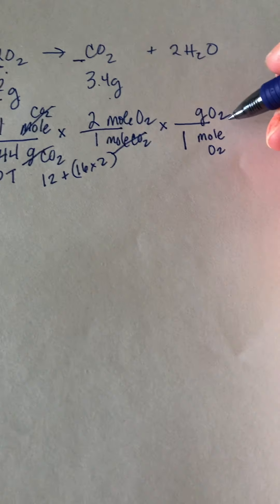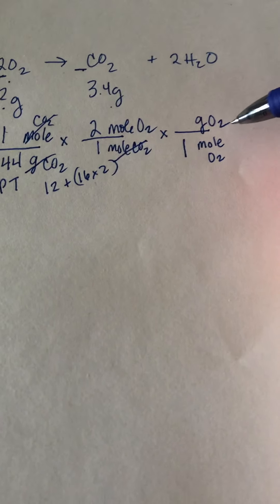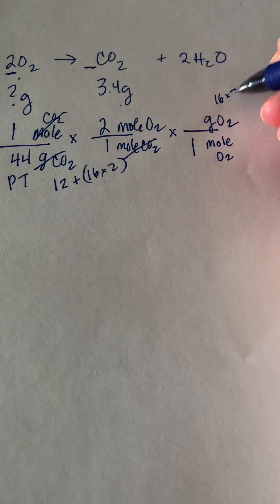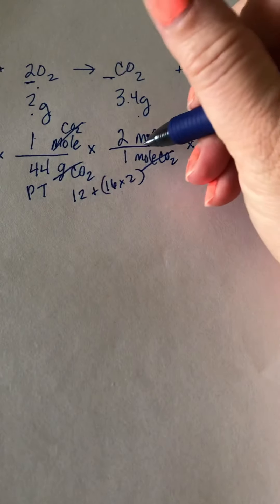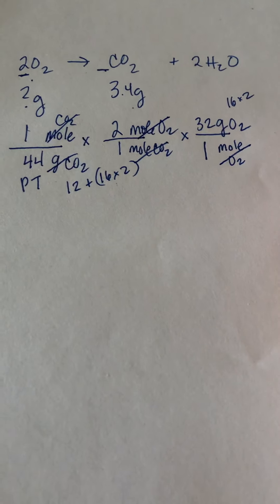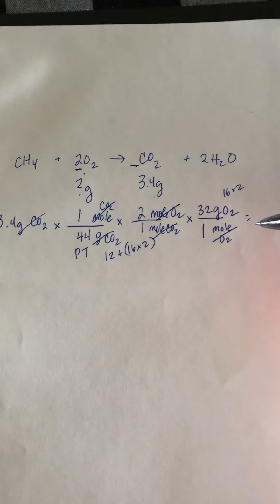So on the periodic table, we already found oxygen to be 16. Oxygen is a diatomic, it's always in groups of two, so it's 16 times 2, there's 2 there to show you that, so it's 32. That cancels out the moles of oxygen.